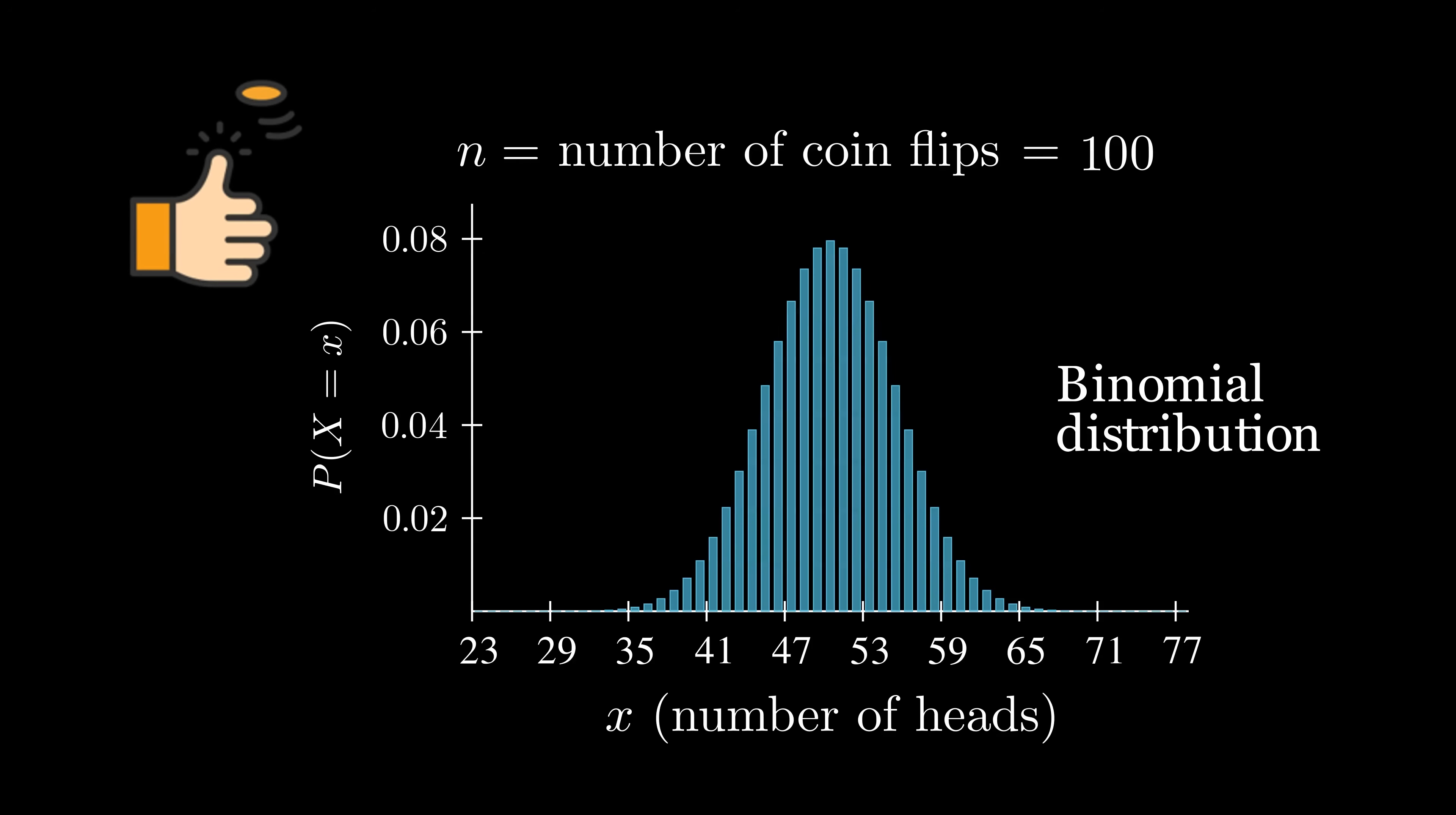Now, I'm not going to talk here about how we can actually calculate each probability in the binomial distribution. That's a bit beyond the scope of this video. But just know that if we're given a certain number of coin flips n, then for any number between 0 and n, we can calculate the probability that we flip that number of heads.